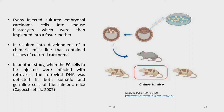Evans injected the cultured embryonal carcinoma cells into the mouse blastocyte, which were then implanted into a foster mother. This resulted in the development of a chimeric mice line containing tissues of the cultured carcinoma. In another study, when the EC cells to be injected were infected with retrovirus, the retroviral DNA was detected in both somatic and germline cells of the chimeric mice.